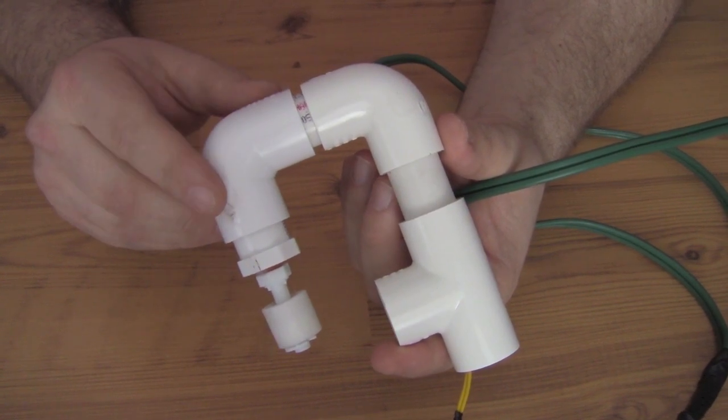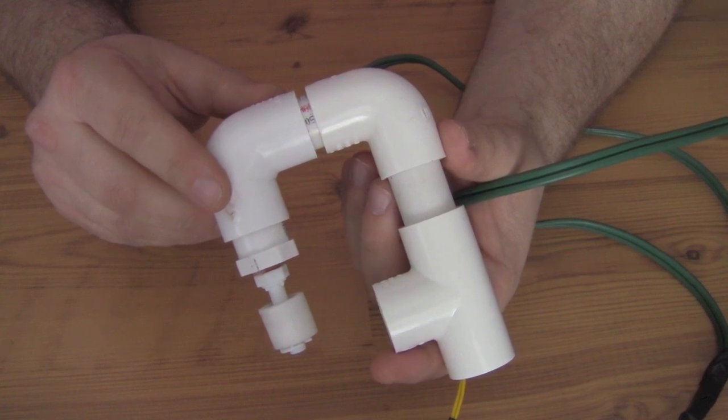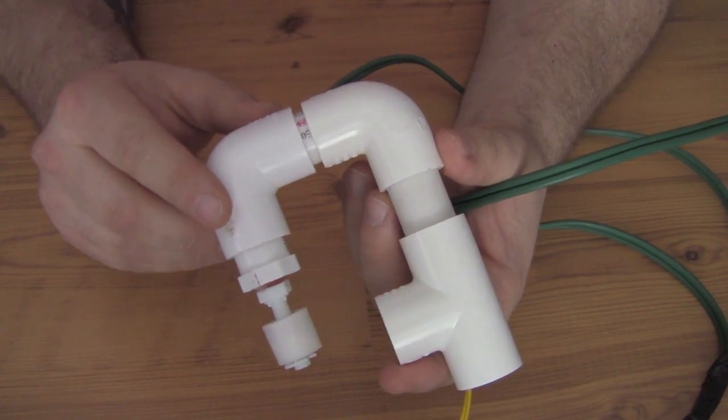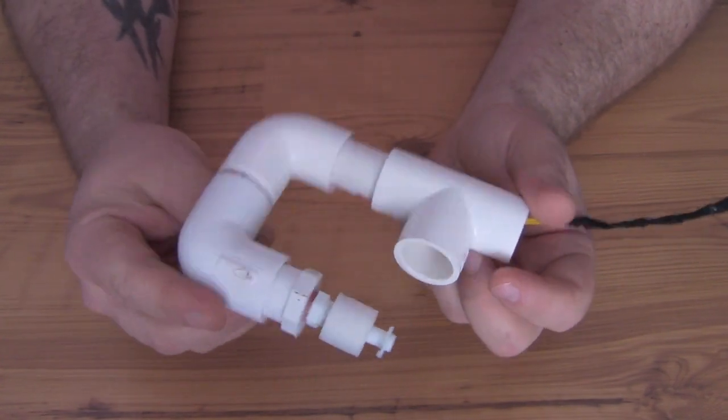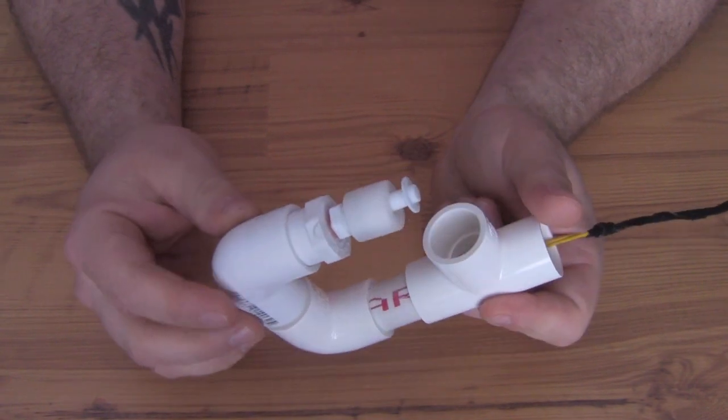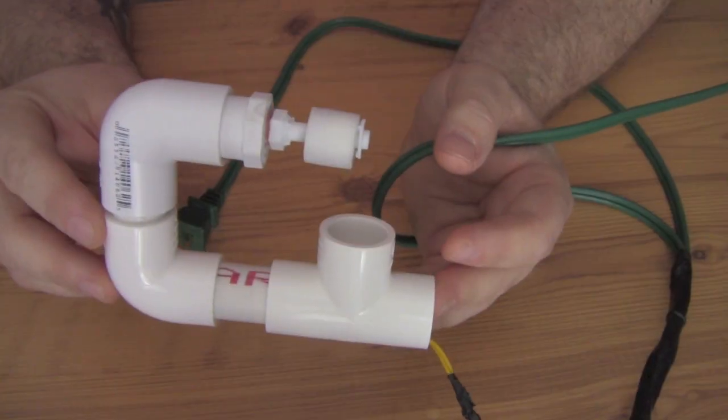I know my 90 gallon aquarium probably uses about 3-4 gallons of evaporated water a week. So putting one of these to use will be 3-4 gallons of RODI water a week that I won't have to lug around anymore. So let's get started.